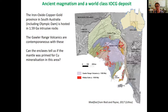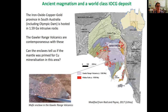Going back in time — a substantial amount of time — to 1.59 billion years old and now looking at South Australia, we have the iron oxide copper gold province, which also includes Olympic Dam. This is hosted in the intrusive rocks, the Hiltaba Suite, which are contemporaneous with the Gawler Range Volcanics. The Gawler Range Volcanics are mostly silicic magmas and they contain mafic enclaves. So can these enclaves potentially tell us if the mantle in this area was primed and ready for copper mineralization?